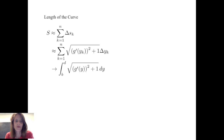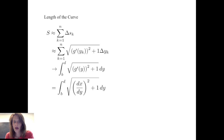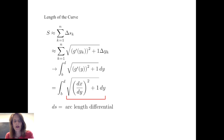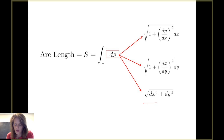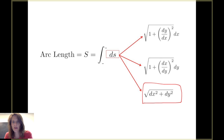The interval from b to d was partitioned along the y-axis, so those become the limits of integration. Alternatively, we can write this integral as the integral from b to d of √((dx/dy)² + 1) dy. Again, we have an arc length differential, this time in terms of y, denoted ds. So arc length s equals the integral of ds, where ds = √(dx² + dy²), or equivalently √(1 + (dy/dx)²) dx, or √(1 + (dx/dy)²) dy.